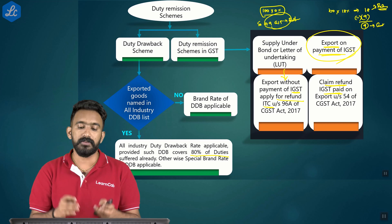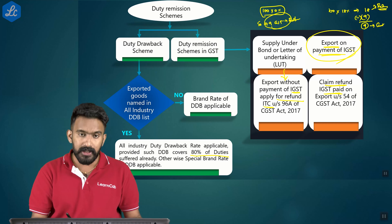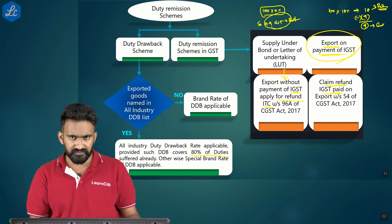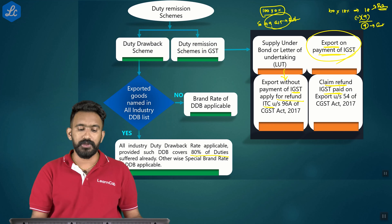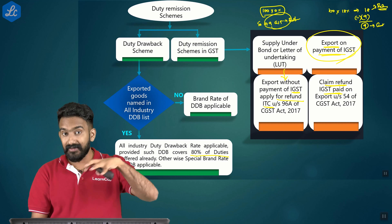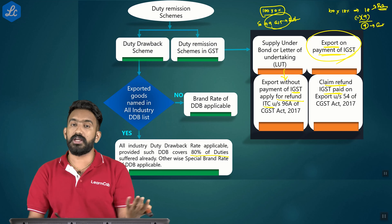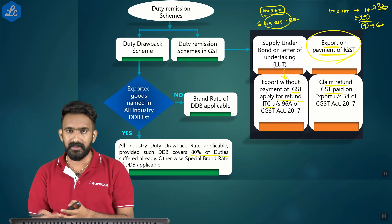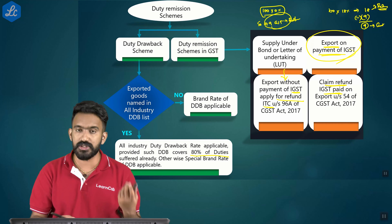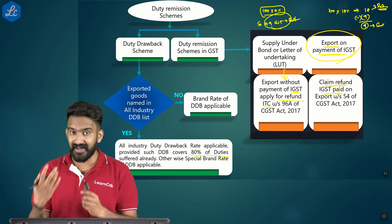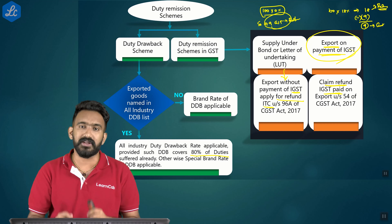People often prefer the IGST payment route because it allows them to also take credit for capital goods. Under Section 74, if the entire import is exported without any manufacturing, up to 98% duty drawback is available. Multiple methods exist through which exports are incentivized via duty remission.